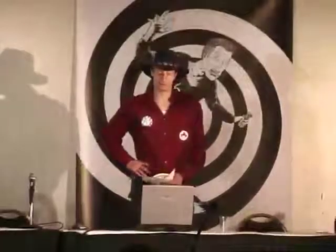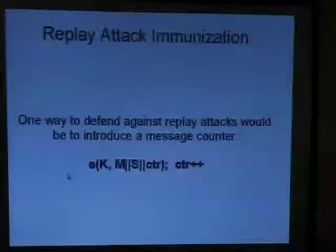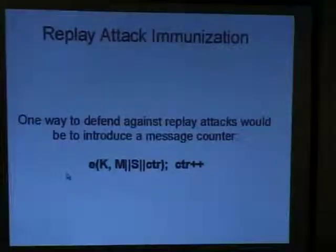So how to immunize yourself against this attack? One way is to introduce a message counter. To encrypt a message, you have M, the signature, and append some kind of integer, a counter, which you keep on incrementing. The receiver also knows CTR and can check, well, after I decrypt, does this message match the counter that I'm expecting? You do have to be careful with this method because if you allow blocks coming in asynchronously, you need to handle that somehow. Otherwise, your stream is corrupt.